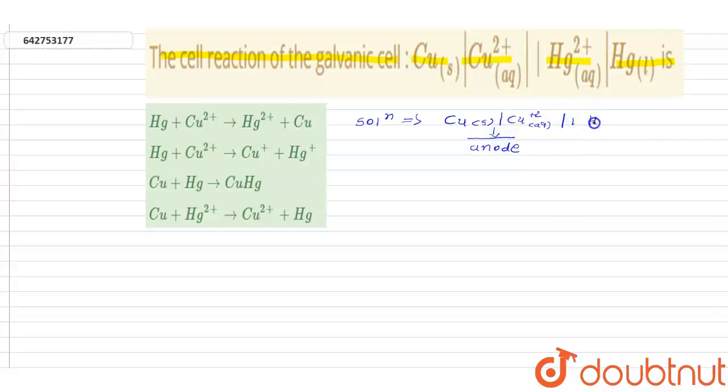And Hg plus 2 equals Hg liquid is cathode.